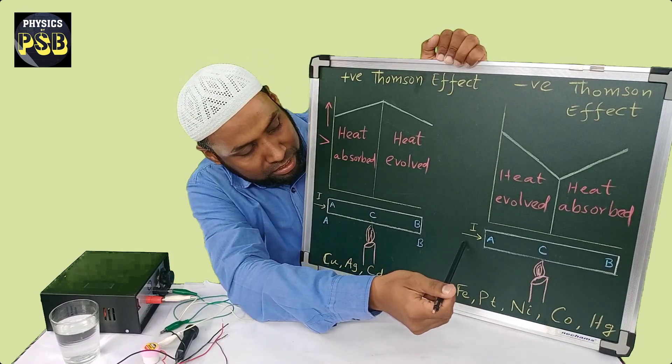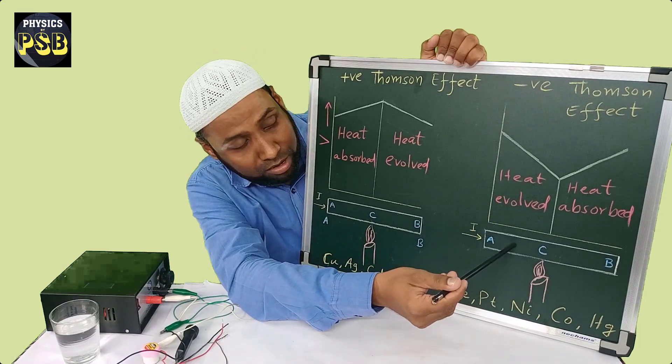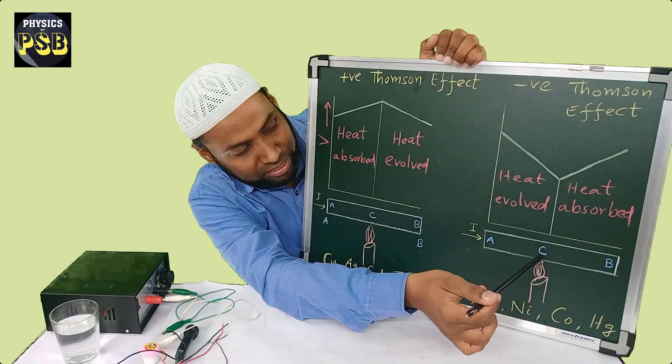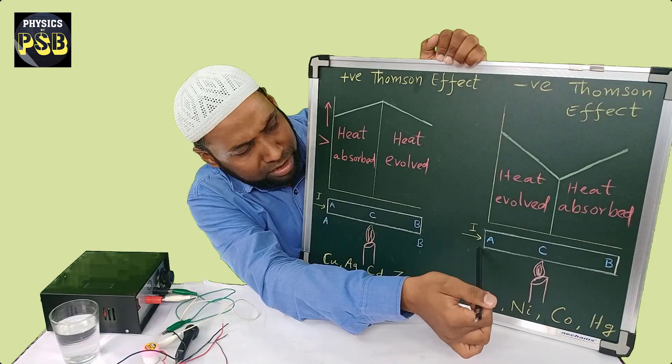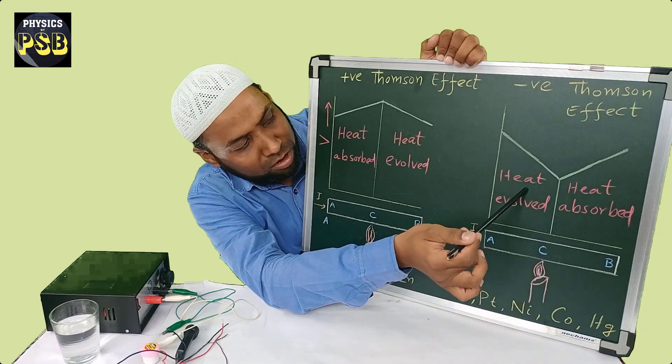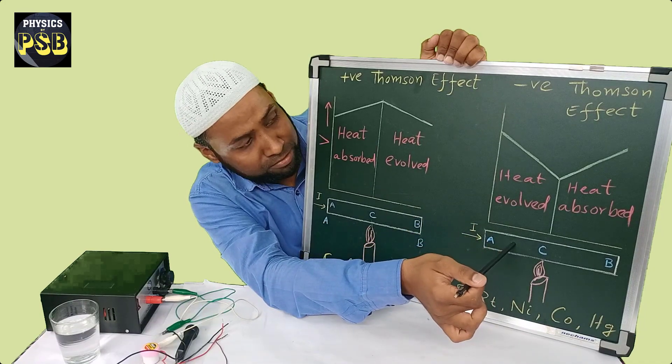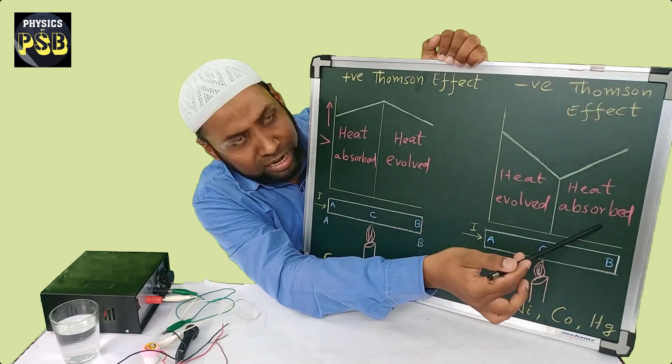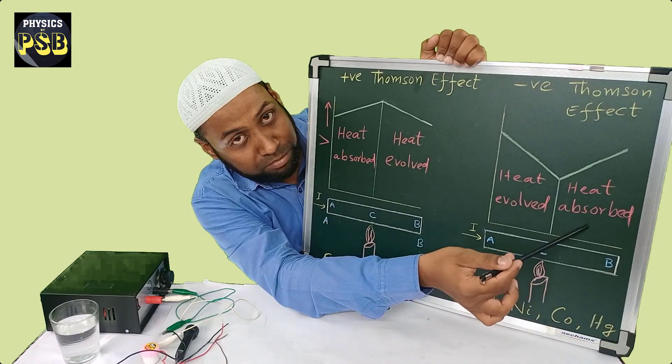Suppose, I pass current in iron bar from A to B and I heat the middle point C. Then from A to C, heat is evolved. So A to C is hot region. B to C, heat is absorbed.